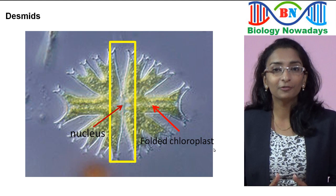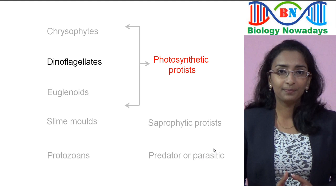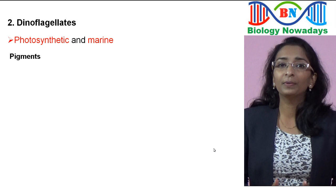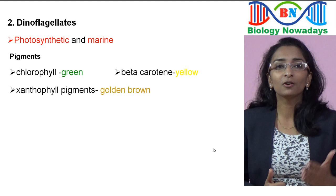Coming to the second group of Protista — dinoflagellates. They are photosynthetic and mostly marine. They appear green because of the pigment chlorophyll, yellow because of beta-carotene, and golden-brown because of a group of xanthophyll pigments.